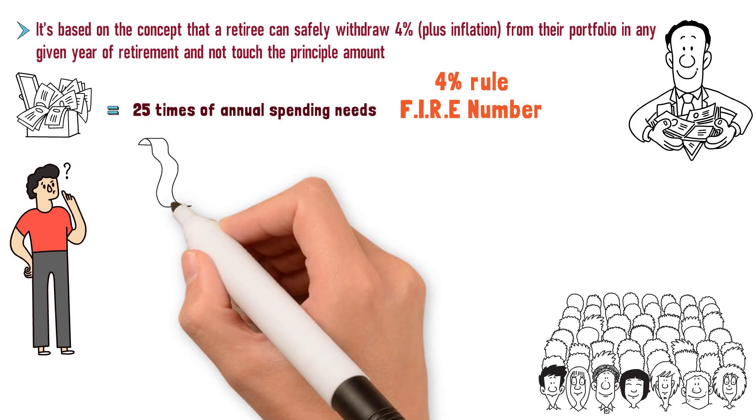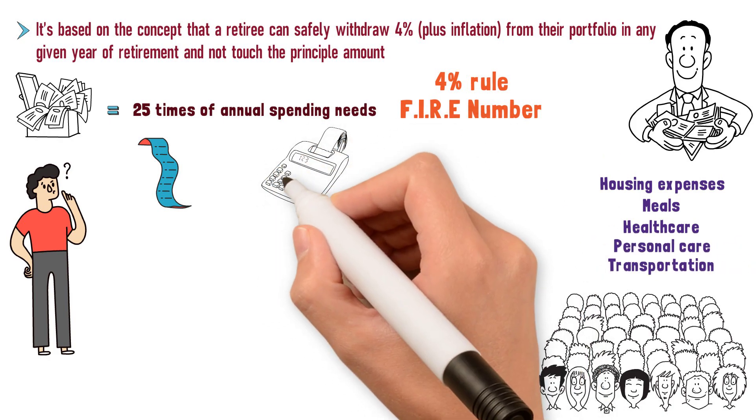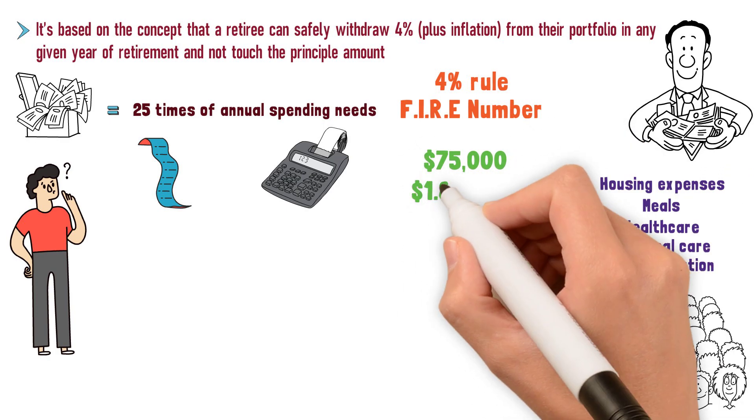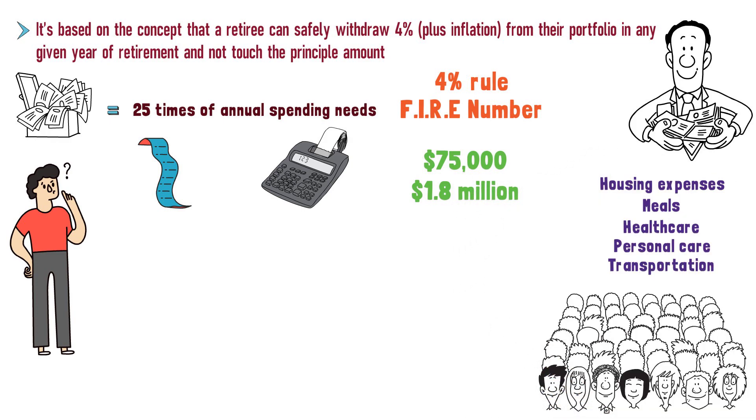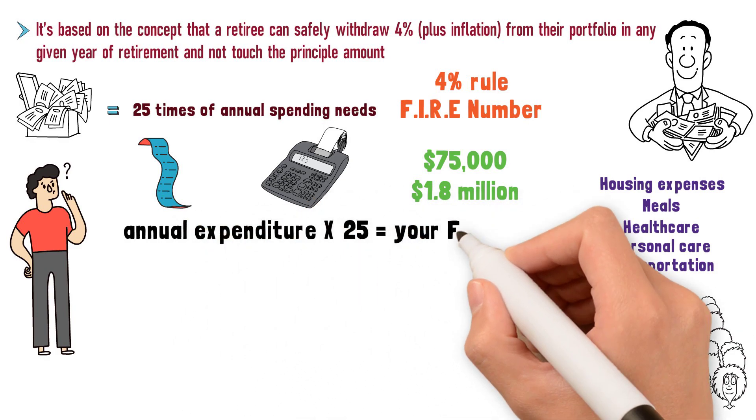To do this, you have to know how much you spend annually in total, including housing expenses, meals, healthcare, personal care, transportation, and more. For example, let's say you calculated all expenses and you spent $75,000 annually. Based on this rule, you'll need a $1.8 million portfolio at retirement. The formula is simple. Annual expenditure times 25 equals your FIRE number.